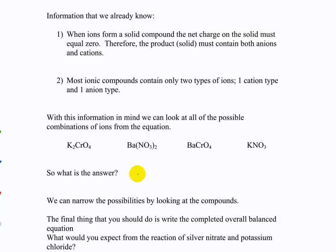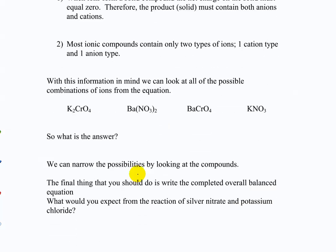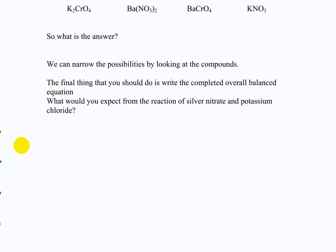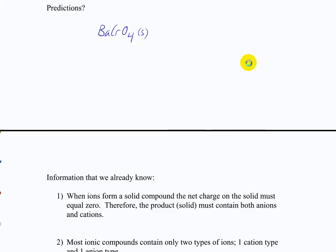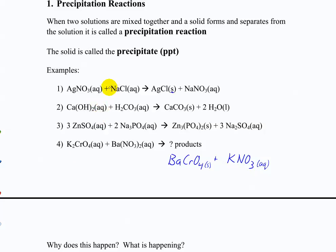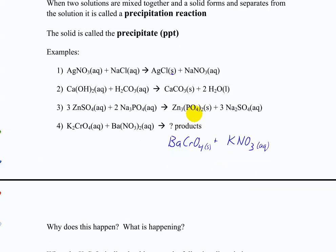Ionic compounds contain just cations and anions, so we look at all the possible combinations and try to figure out which ones are soluble. We know the two reactants we started with are soluble, because they dissolved. How do we know potassium nitrate is probably soluble? Well, sodium nitrate is soluble, and sodium is right above potassium on the periodic table, so perhaps potassium nitrate is also soluble — but that's just guessing.